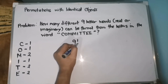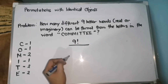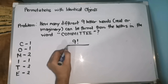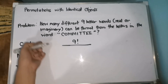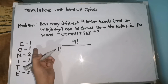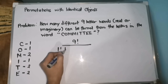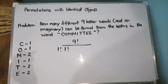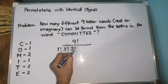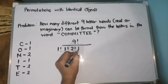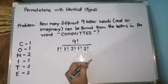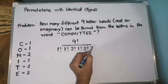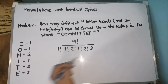And then ang ating denominators ay ito. That is 1 factorial times 1 factorial times 2 factorial times 1 factorial times 2 factorial times 2 factorial.